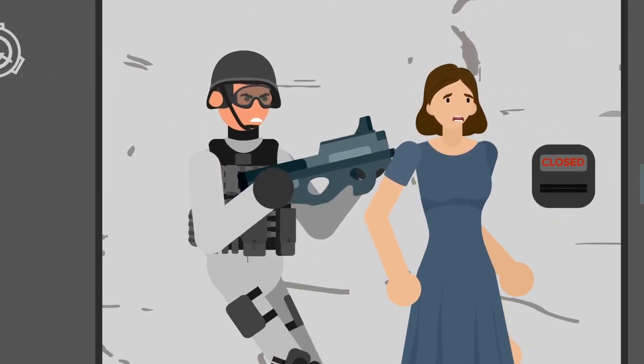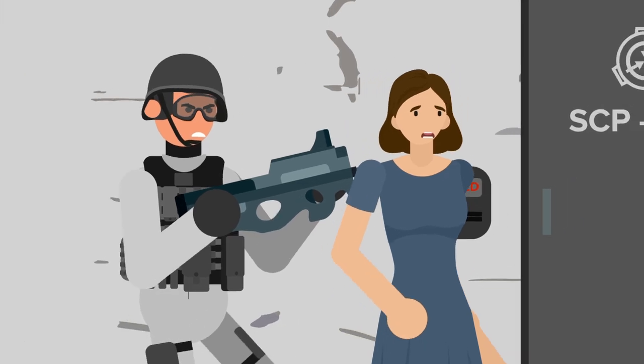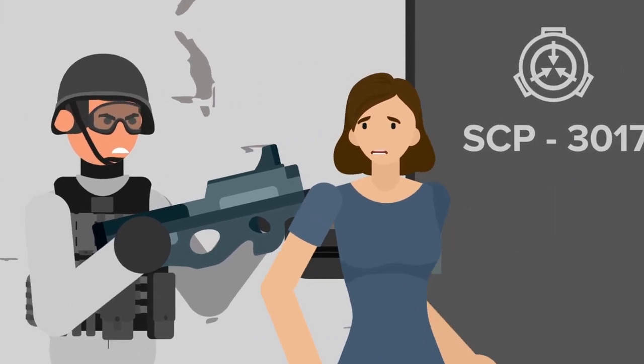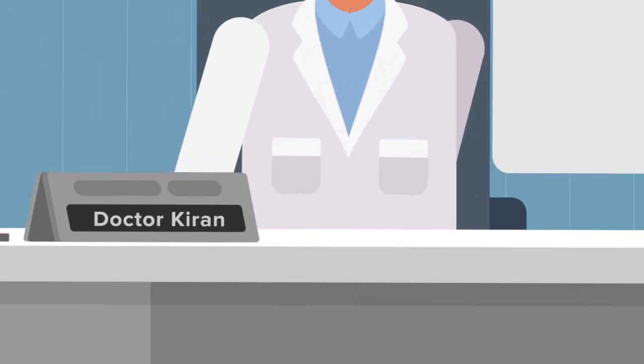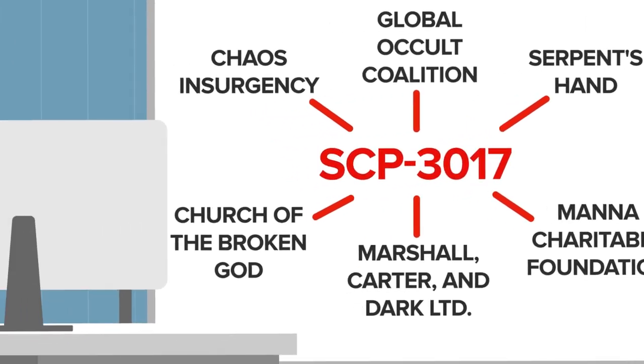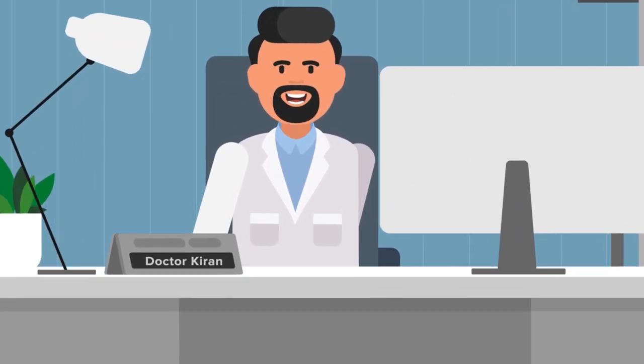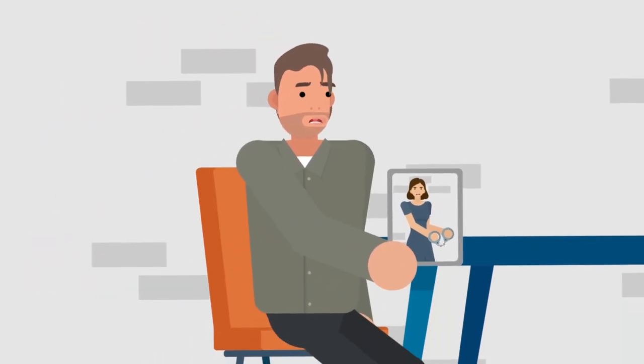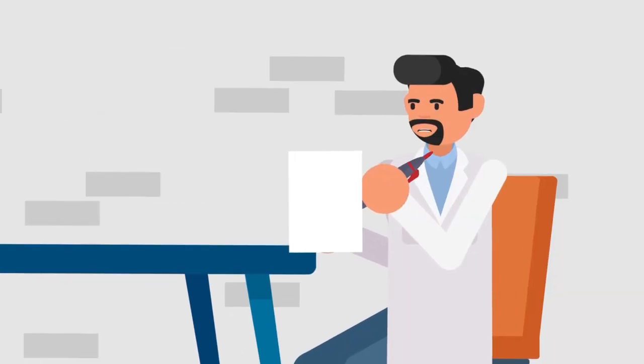By bringing Frasier's fiancée, Nadia, into containment and showing him a live video feed of her, Foundation researcher Dr. Kiran hoped to coax a wealth of valuable information out of SCP-3017. Afraid for his partner's life, Frasier did his best to answer their questions, and Nadia was later freed and given amnestics to forget the incident.